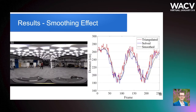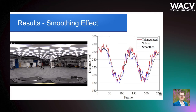We also investigate the effect of our smoothing, measuring the distance of the mid-hip joint from the camera throughout the scene. In red is the triangulated data, which appears very jittery. In blue is our initial solve, which is smoother but still has large distance changes. In black is the smoothed result, which shows only one large-scale jump.